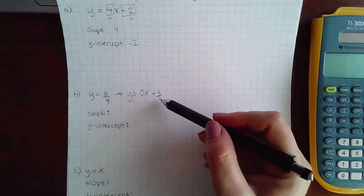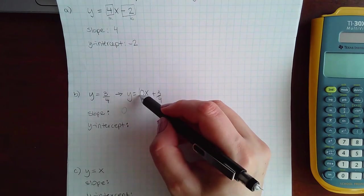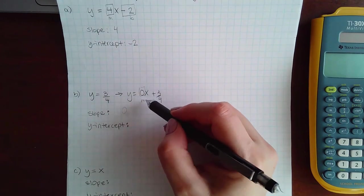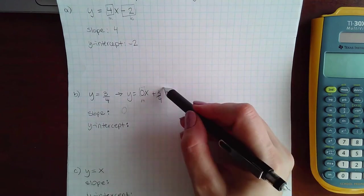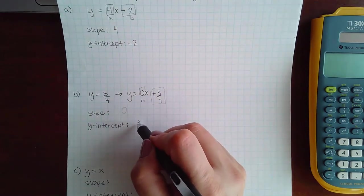Writing it in this way makes it apparent that the slope would be zero, because the number in front of x is zero, and then the positive three-fourths is the y-intercept.